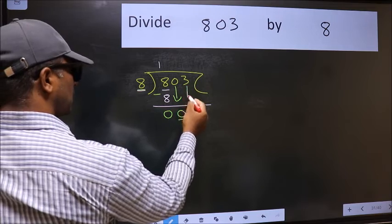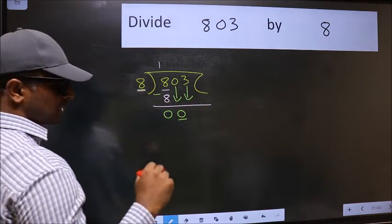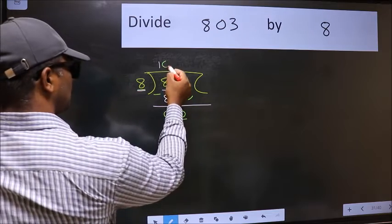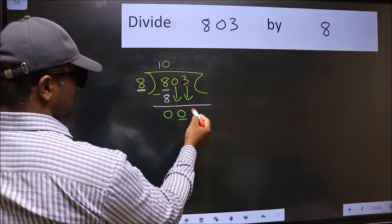So we should bring down the second number. And the rule to bring down the second number is we should put 0 here. Then only we can bring this number down.